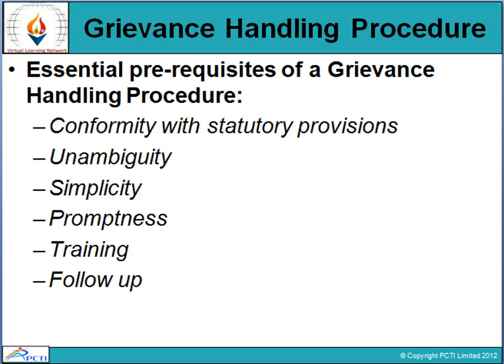What are the essential pre-requisites for grievance handling? First is conformity with statutory provisions — you must know what kind of provisions and policies are being followed and whether things are happening accordingly. Second is unambiguity — understanding what changing scenarios are causing grievances to grow. Third is simplicity — how simple or how critical the grievance issue is. Fourth is promptness — how you will go about expressing and promoting the grievance. Fifth is training — what kind of training is required in grievance handling. And sixth is follow-up — what kind of follow-up is going to be conducted.